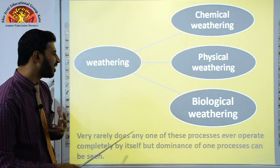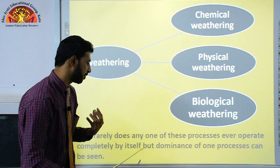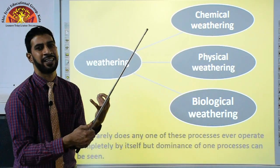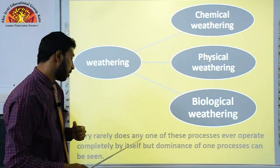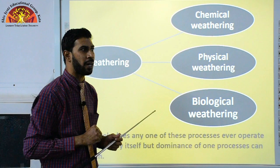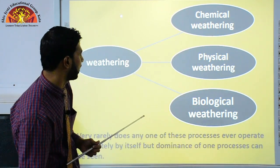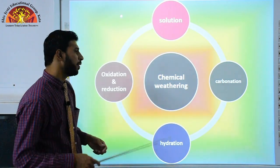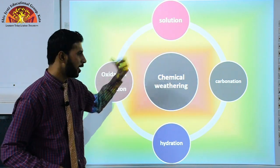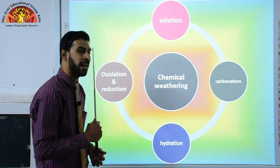Very rarely does any one of these processes operate completely by itself — they need each other's support. When we talk about chemical weathering, it involves solution, carbonation, hydration, oxidation, and reduction.